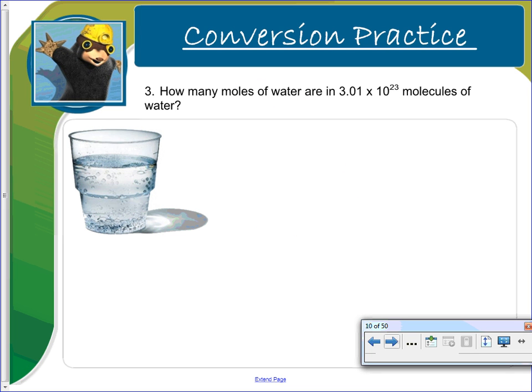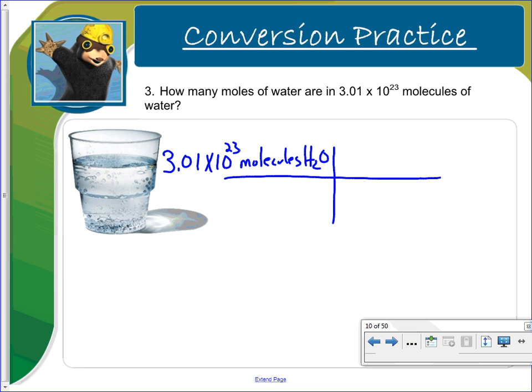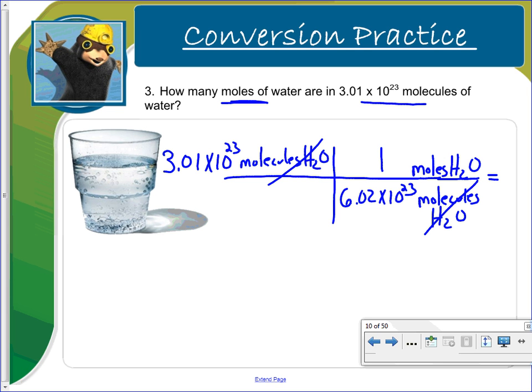How many moles of water are in 3.01 times 10 to the 23rd molecules of water? So we start by writing down our given 3.01 times 10 to the 23rd molecules of water. We want to get rid of molecules, so we'll put it on the bottom so it will cross out. And we do know a relationship between moles and molecules. And so 1 mole is equal to 6.02 times 10 to the 23rd molecules. That crosses out. And so when you punch this into your calculator, you'll do 3.01 EE 23 times 1 divided by 6.02 EE 23. And you should get 0.498 moles of H2O.